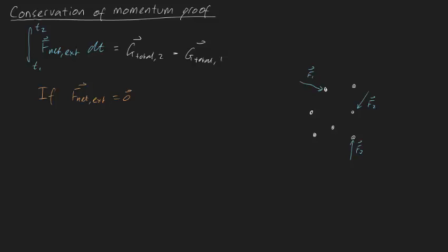The left-hand side of this expression will change, so let's write it in. This will become the integral from T1 to T2 of zero dt, right? And that's going to be equal to our total change in momentum. G total two, minus G total one.